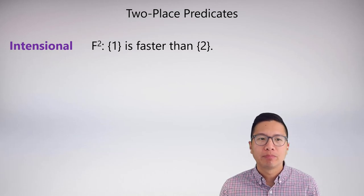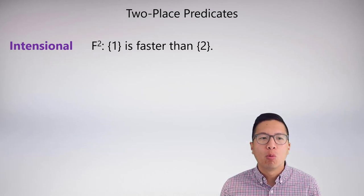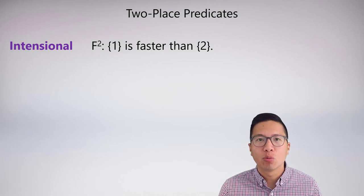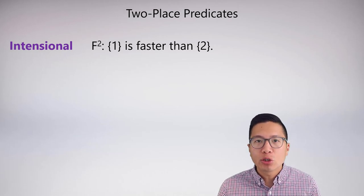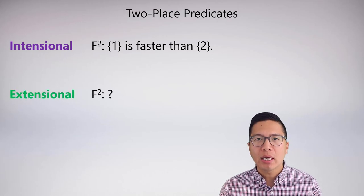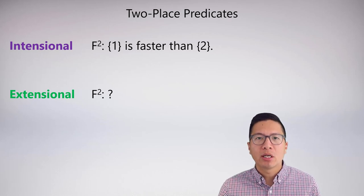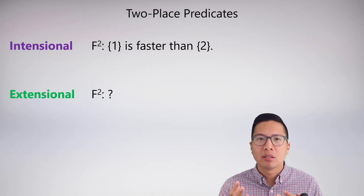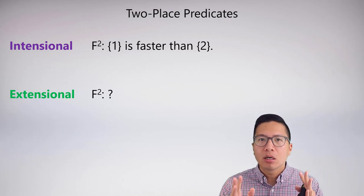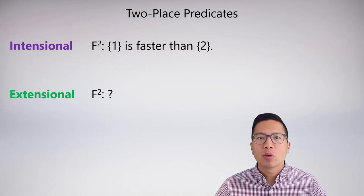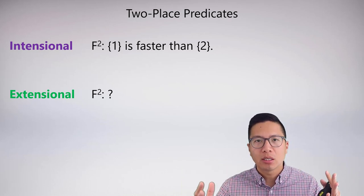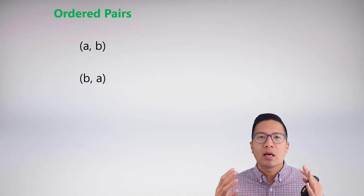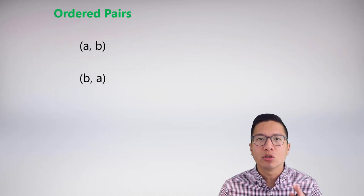Here's an example of a two-place predicate: F2, meaning 'one is faster than two.' I've defined it intensionally, which is the standard way when given a symbolization question. How would we define this extensionally? Normally we'd just state the set of all things that belong to it, but here we have a relationship between two things — one thing and another — so how can we just state all these things in a set?